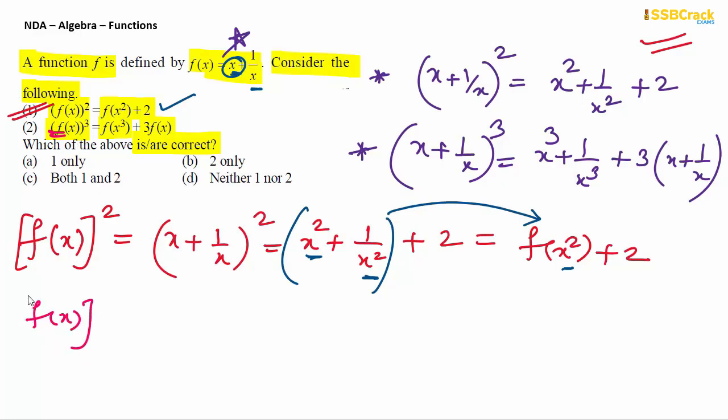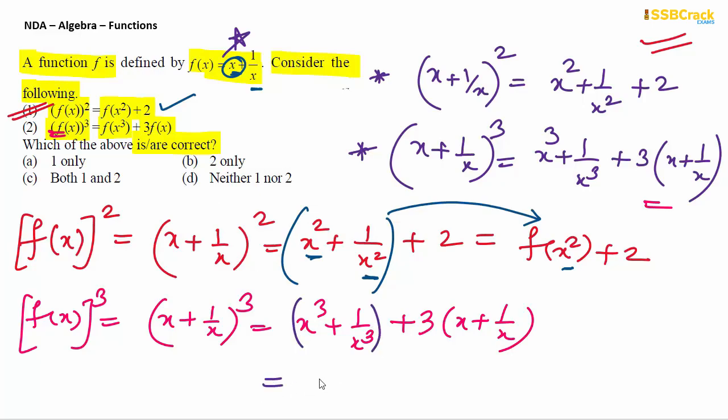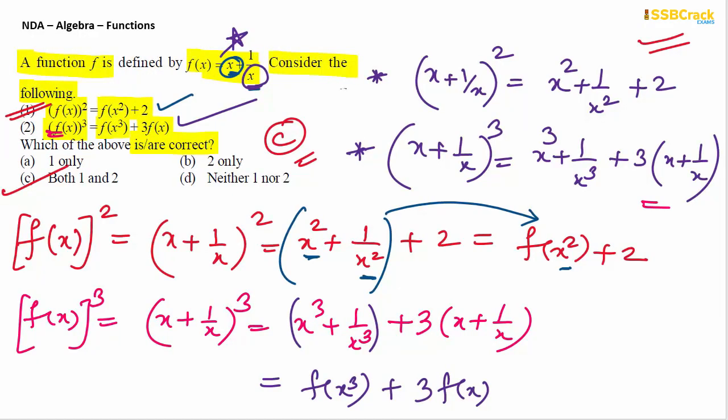Second, the left hand side is f of x whole cube, which means (x plus 1 by x) cube, which we already wrote as x cube plus 1 by x cube plus 3 into (x plus 1 by x). The first expression will be f of x cube as per the rule - replace variable x by x cube - plus 3 times f(x). This tells us statement 2 is also true. Both are true, so option C.